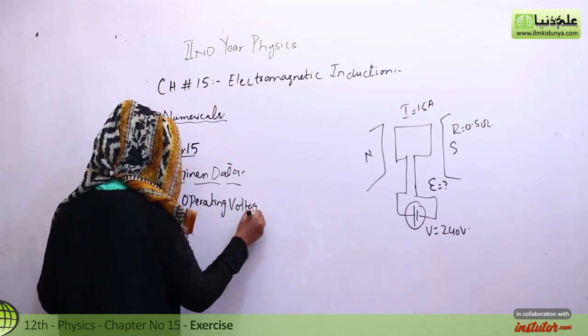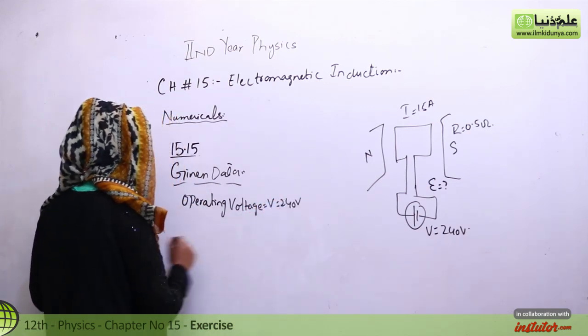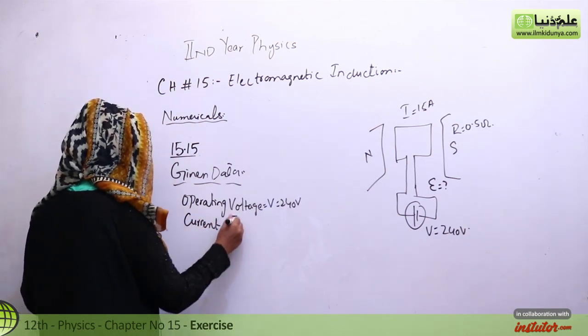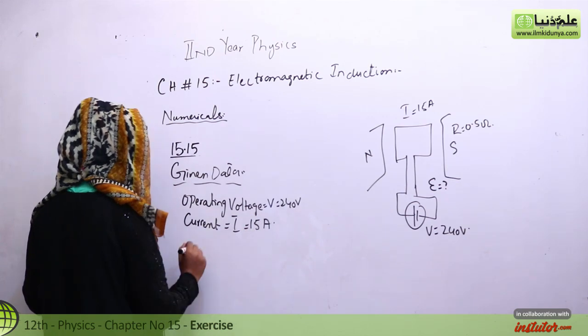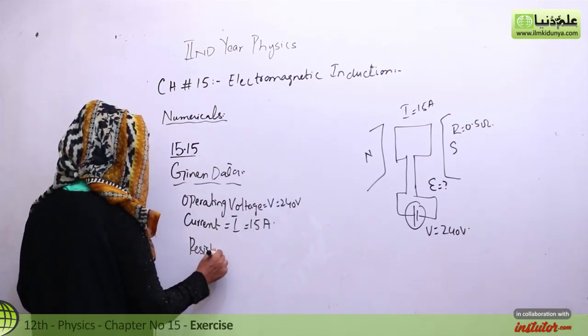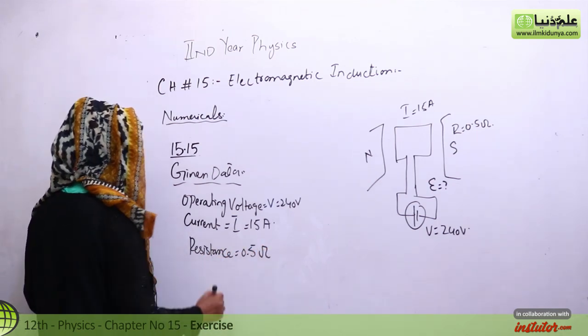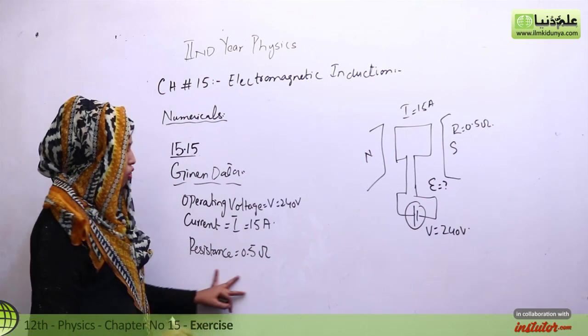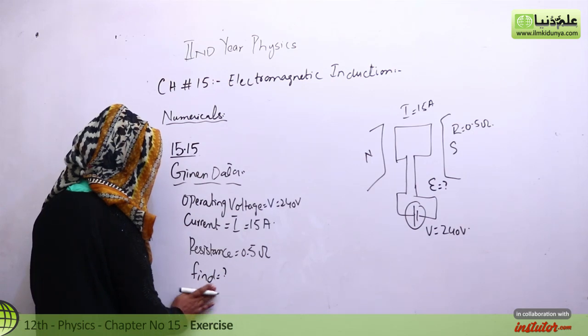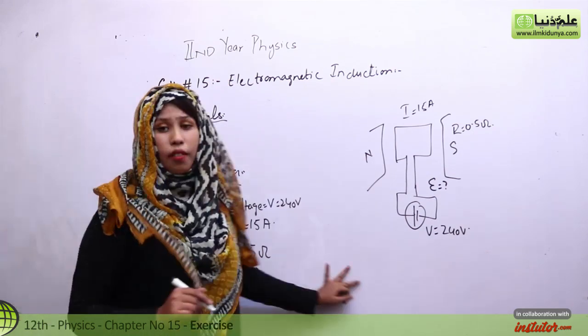We start with the given data. First, the operating voltage is 240 volts. Next, current is 15 amperes. Next, resistance is 0.5 ohm. These three things are given. We need to find the induced EMF, which is the E value.